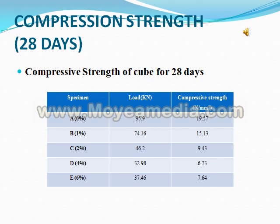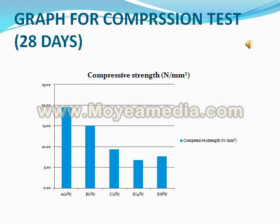Compressive Strength for cube at 28 days: Specimens A (0%), B (1%), C (2%), D (4%), E (6%). Load in kN: 95.9, 74.16, 46.2, 32.98, 37.48. Compressive Strength in N/mm²: 19.57, 15.53, 9.43, 6.73, 7.64. Graph for Compressive Strength at 28 days shown.